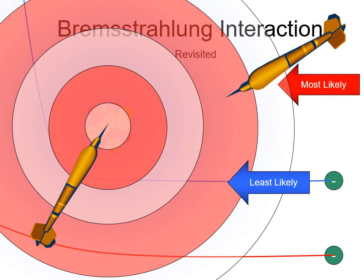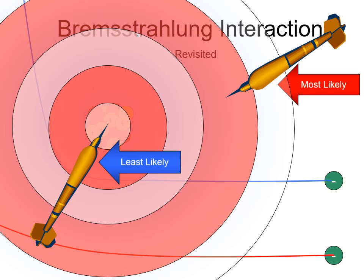So the most likely interactions are the low energy type, and the least likely interactions are the ones that hit the bullseye.